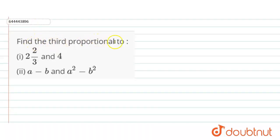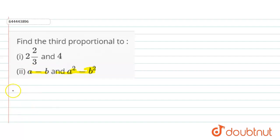Find the third proportional. First part is 2, 2 by 3, and 4. Second part is a minus b and a squared minus b squared. Now let's come to the solution.